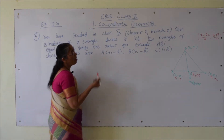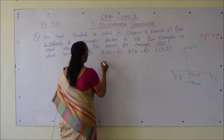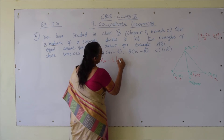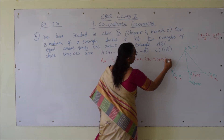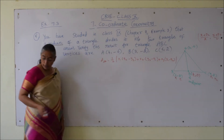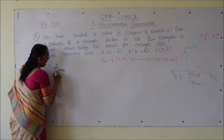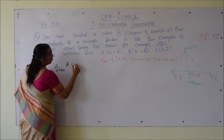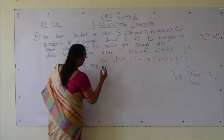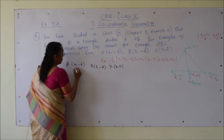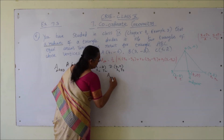Now we have to find the area of triangle ABD and area of triangle ADC and prove both areas are equal. The area of a triangle formula is: half times |x1(y2 - y3) + x2(y3 - y1) + x3(y1 - y2)|. For triangle ABD, the vertices are: A(4, -6), B(3, -2), D(4, 0). So x1, y1 = (4, -6), x2, y2 = (3, -2), x3, y3 = (4, 0).